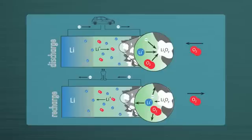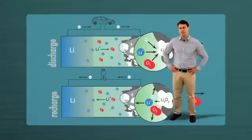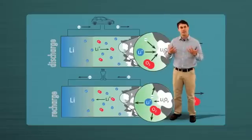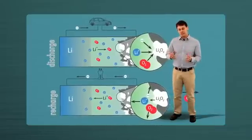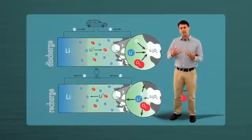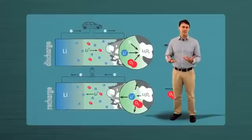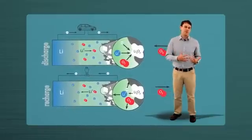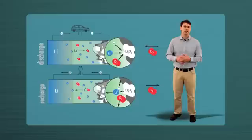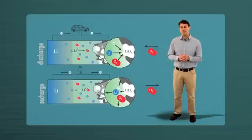So we call this system, this type of battery, a precipitation dissolution system, because in the course of operating the battery, we nucleate and grow one of these peroxide or oxide phases. And then when we recharge the battery, this phase has to decompose or dissolve back into the electrolyte.